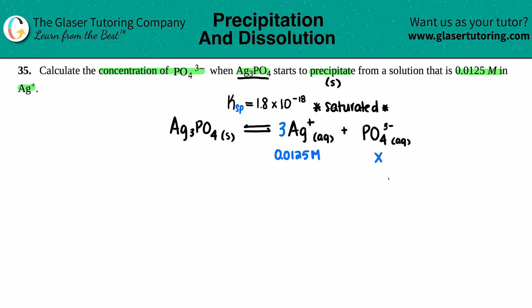Now I'm going to use my Ksp equation. It's just equal to the products raised to the coefficients. Let's make our Ksp equation.